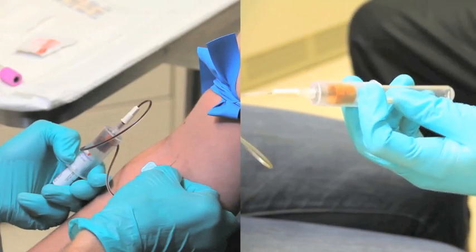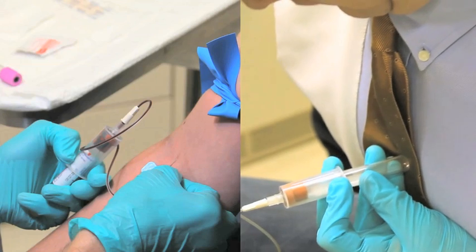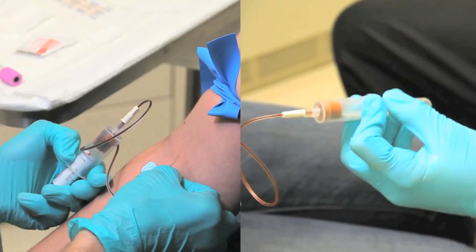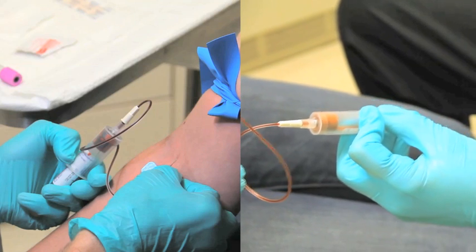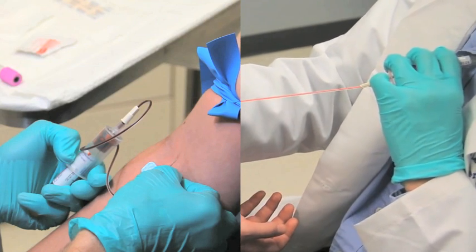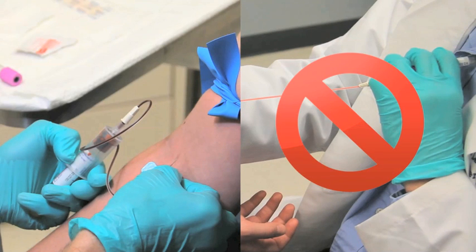You can also press the vacutainer against your chest and force it into the adapter. This requires that you lean forward far enough so that the tubing is not stretched to the point that it puts tension on the needle. Always bring your chest towards the tube and not vice versa. Bringing the tube towards your chest will stretch the tubing and you may inadvertently pull the needle out of the patient's arm.